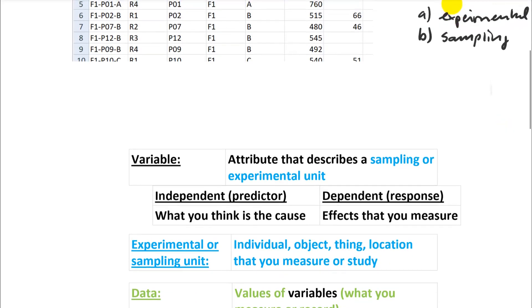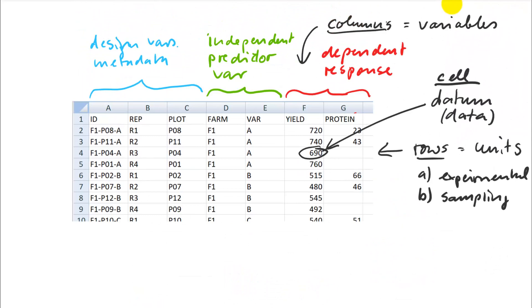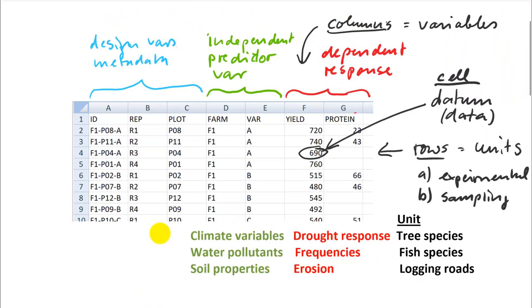So let's also give some examples for independent and dependent variables. One thing that I do is studying the effect of climate variables on drought response, and my units are tree species. But you could also study water pollutants and look at the frequency of fish species as an effect. Or just to give a completely different example, soil properties as independent variable, erosion would be your dependent variable, and your study subjects may be loading rolls.